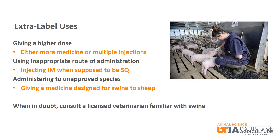It is also extra-label use to give an injection intramuscularly when it is supposed to be subcutaneous. Another all too common example is giving a medication labeled only for swine to sheep. It is important to note that this can be done on the order of a veterinarian through a valid VCPR, or veterinarian-client-patient relationship, but this is the only way it can be done. You cannot choose to do this on your own. When in doubt about anything on the medicine label, consult a licensed veterinarian familiar with your swine herd.